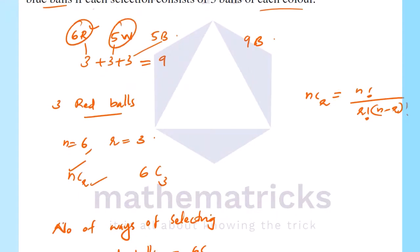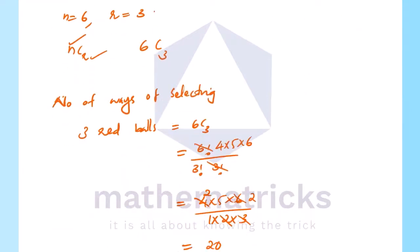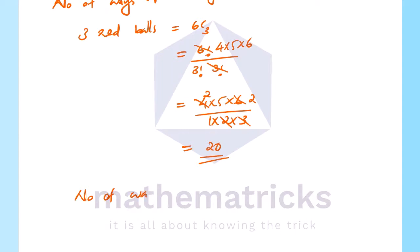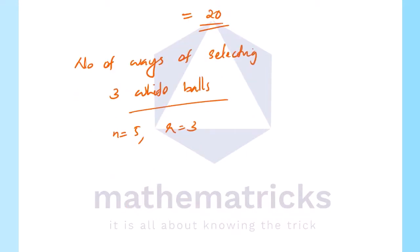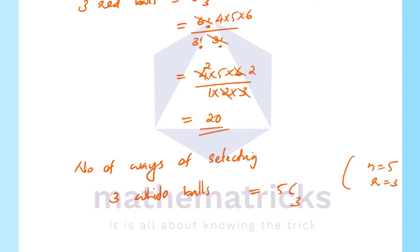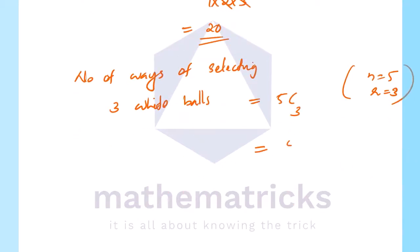Now for the white balls. We have 5 white balls and we select 3 white balls. Here n equals 5 and r equals 3. That is equal to 5 factorial divided by 3 factorial into 5 minus 3, which is 2 factorial into 3 factorial.